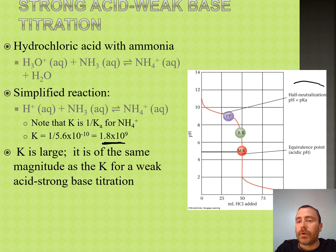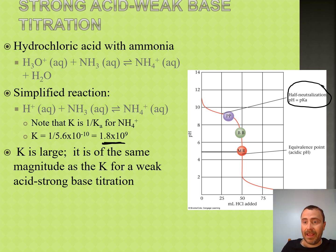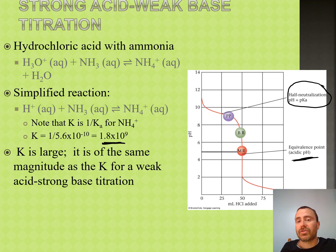We also have many of the same things that we saw for our weak acid-strong base. For our half-neutralization, or halfway to the equivalence point, the pH is still the pKa of our acid. But notice that at the equivalence point, our pH is going to be slightly acidic. When we had a weak acid-strong base, it was slightly basic. For a strong acid-weak base, it is slightly acidic.